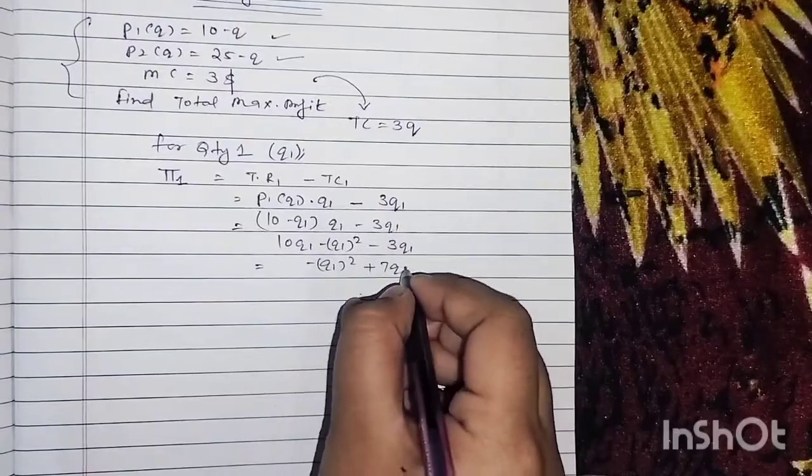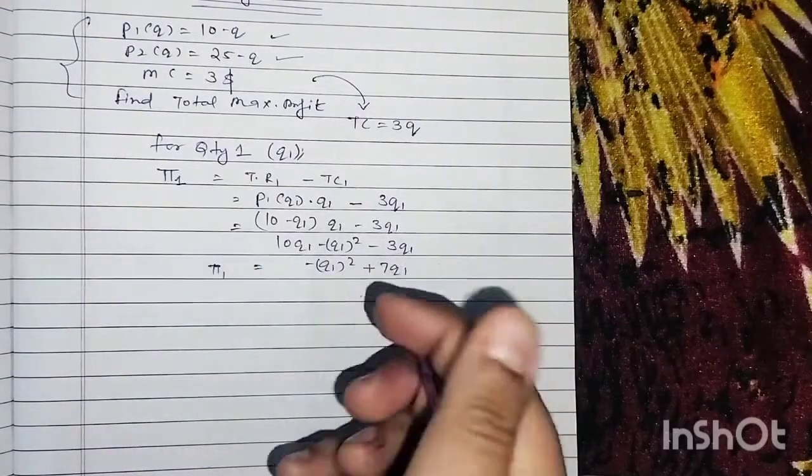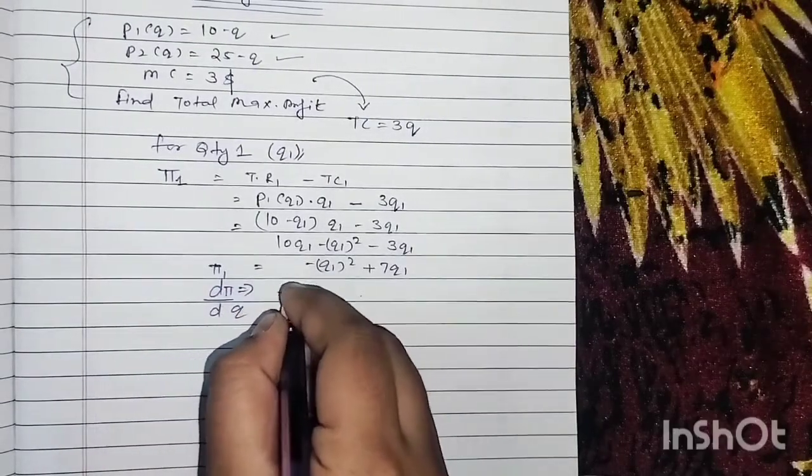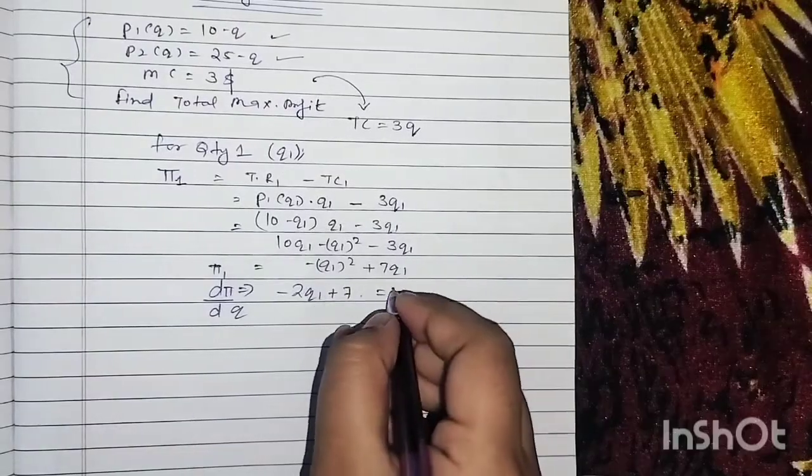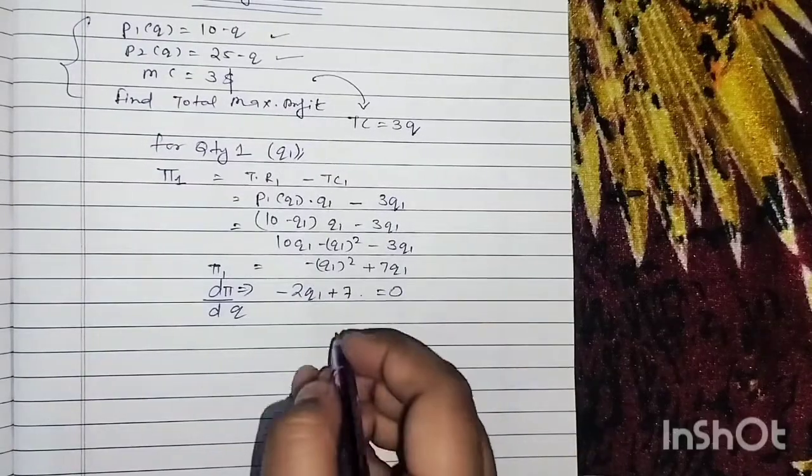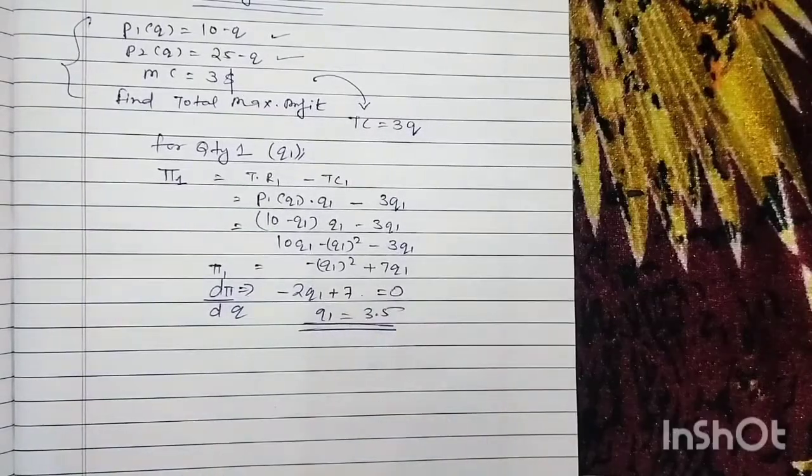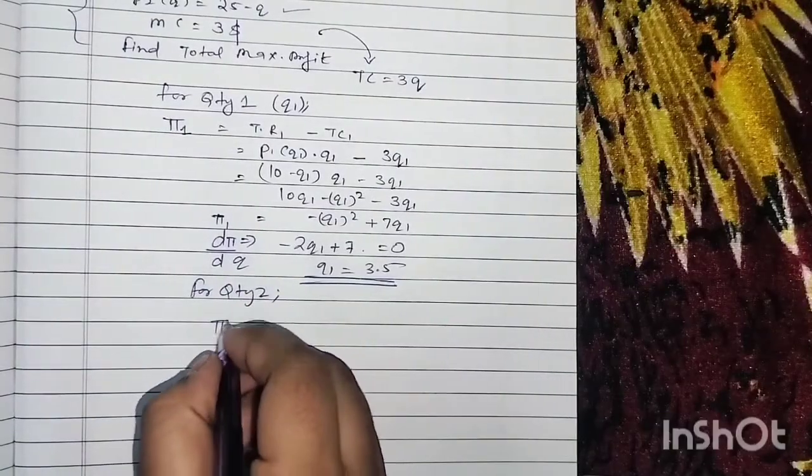By differentiating this profit with respect to the quantity, you get -2Q1 + 7, and you can set it equal to 0. This will give you Q1 = 3.5.